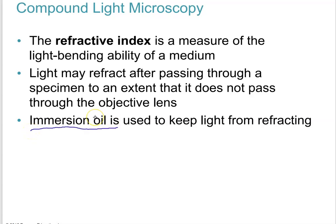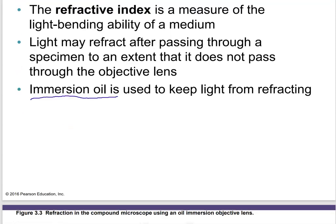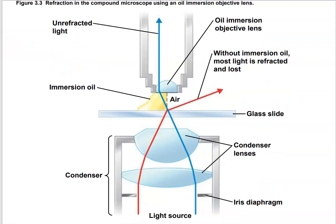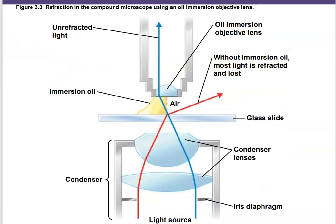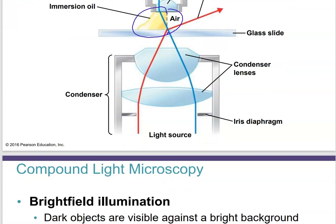Immersion oil is used to keep light from refracting because it has the same refractive index as glass. Instead of light going from glass to air and back into the objective lens, the immersion oil bridges that gap, minimizing refraction and loss of light, so that we have a good amount of light passing through.